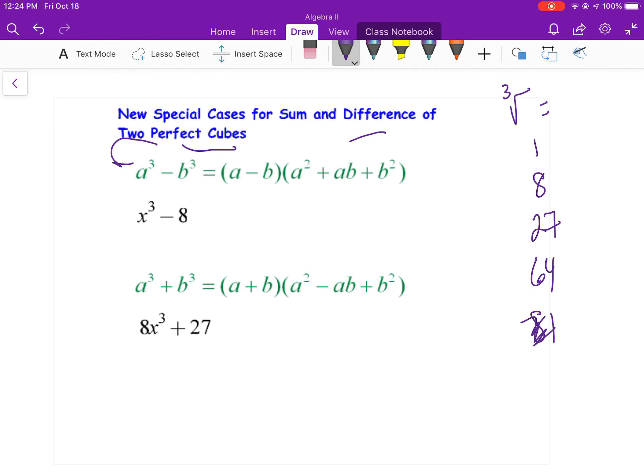But anyways, I'm looking to see what to the third power gives me x to the third, x. What to the third gives me 8, and that's 2. So when I'm putting in these a's and b's, this is my a, and this is my b. So if it's different, it's a minus b, so x minus 2, x squared, plus 2x, plus 2 squared, which is 4. Right? 2 squared is 4.